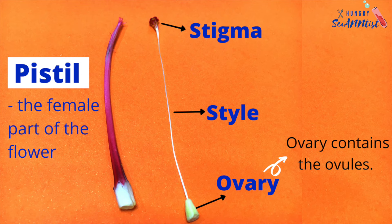Pistil — it is the female part of the flower. It has three parts: stigma, style, and ovary. Ovary is the part that contains the ovules.